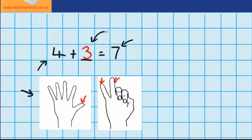So 4 plus 3 equals 7. Well I hope you've found this lesson helpful. For more lessons, check out teachertools.co.nz